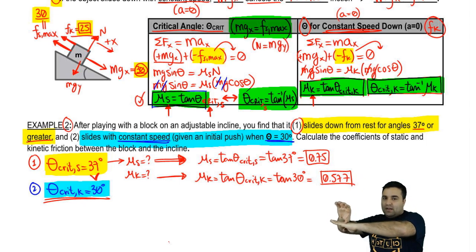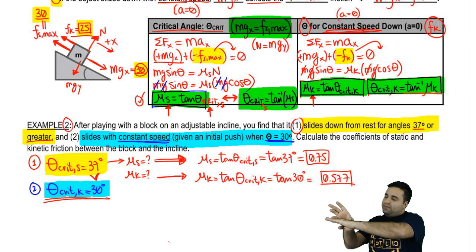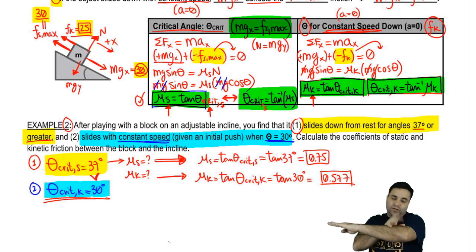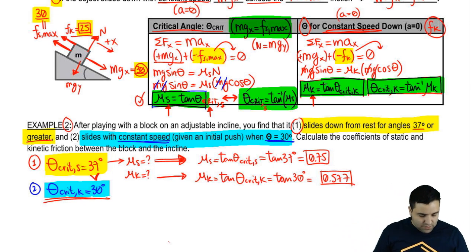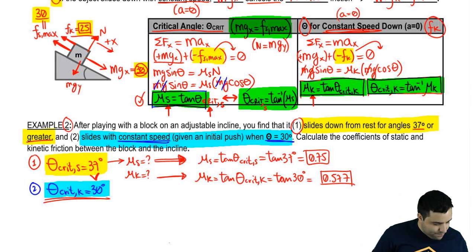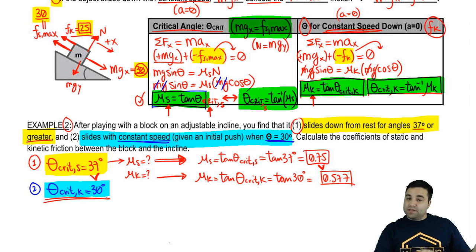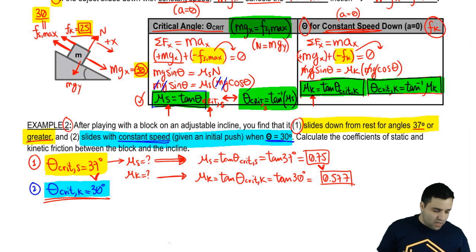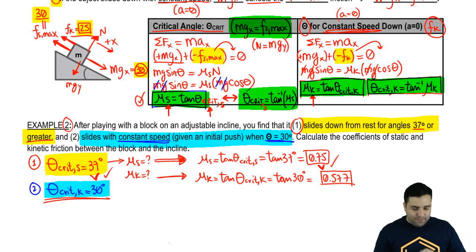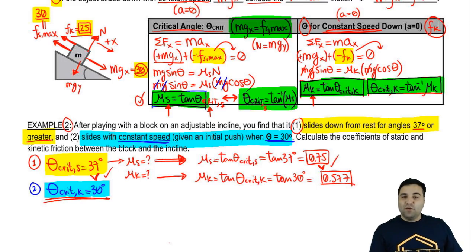This makes sense because for constant-speed sliding to occur, you must be below the angle that breaks static friction — someone pushes the block at 30 degrees, static friction breaks, and kinetic friction keeps it moving. We already know static friction is greater than or equal to kinetic friction, so it follows that the static critical angle is larger as well.